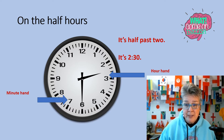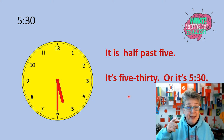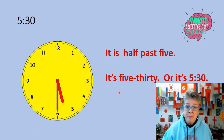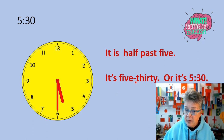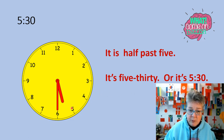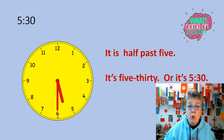Five thirty. We'll have more practice. Five thirty — it is half past five. You try it. It is half past five. You can pause it and come back. It's five thirty, and we put the hyphen in there. Five thirty. Or, it's five thirty with the colon — five colon thirty. Look at the hour hand, it's between the five and the six, so we know it's past five but not quite six. It's half past five. The minute hand is halfway all the way around. So we say it's half past five, or five thirty.